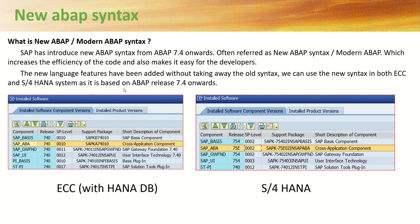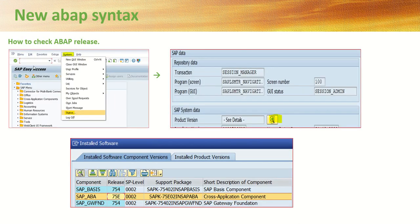As it is based on ABAP release 7.4 onwards — here if you can see the screenshot on the left-hand side, this is an ECC system with HANA DB and the ABAP release is 7.4. On the right-hand side, this is from S/4HANA and the release is 7.5. To check the ABAP release in your system, after login go to System, click on Status, then click the Detail button, and you will be able to see the ABAP release.